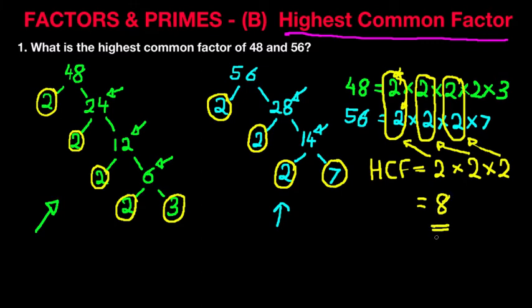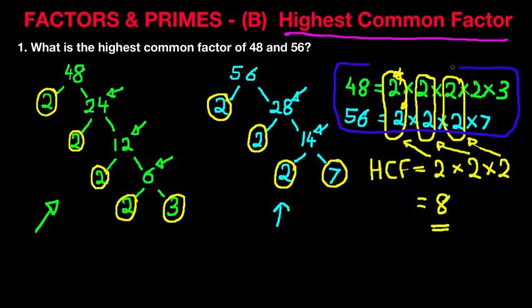2 times 2 times 2 is 8. That is the highest common factor of the numbers 48 and 56. To put it simply, that is the largest number that is divisible by both 48 and 56. Remember: the first task is to find the prime factors of both numbers, then write them down in this format, then circle the ones which are similar and multiply them together — that will give you your highest common factor.